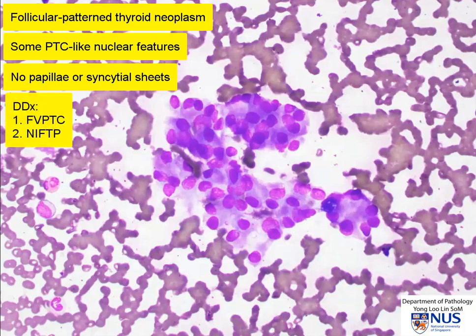The differential includes follicular variant PTC and also NIFT-P — non-invasive follicular thyroid neoplasm with papillary-like nuclear features. Because NIFT-P is an indolent tumor that should not be over-treated with total thyroidectomy, it would be prudent to hold back and make a cytologic diagnosis of either follicular neoplasm with a mention of atypical nuclear features and the differential of FVPTC and NIFT-P, or to call this suspicious for PTC but also note in the comment that FVPTC and NIFT-P are not excluded.